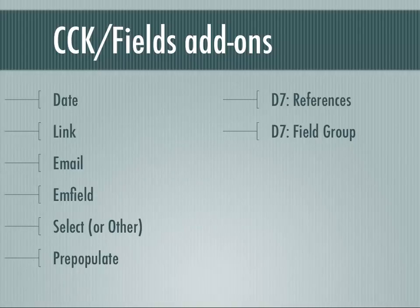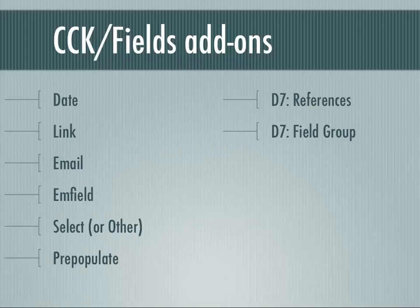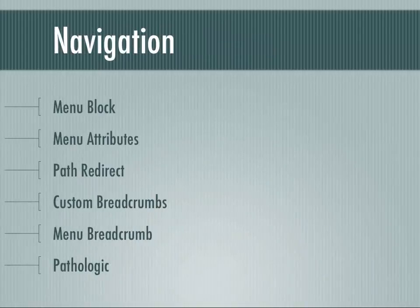In Drupal 7, a lot of the functions of CCK were brought into Drupal core. Most of the stuff related to fields was included. However, user and node references — which are just pointers to other content — and groups of fields were not included. Those still remain in contrib, and they have their own modules called References and Field Groups. So if you want that functionality, you need to install those separately.